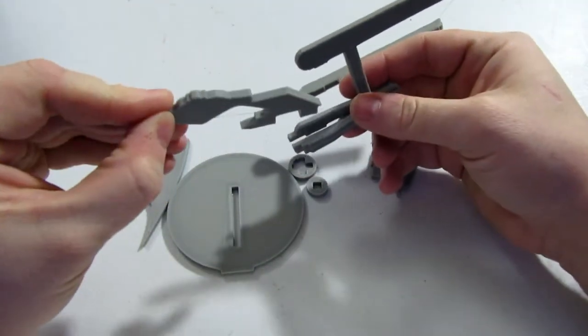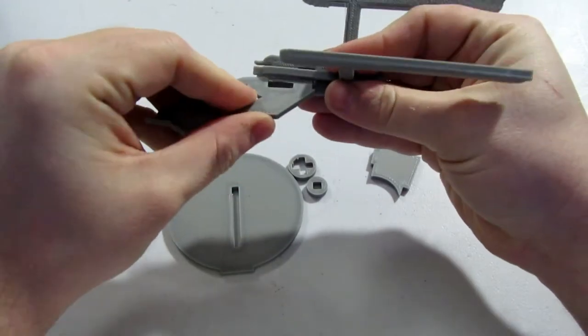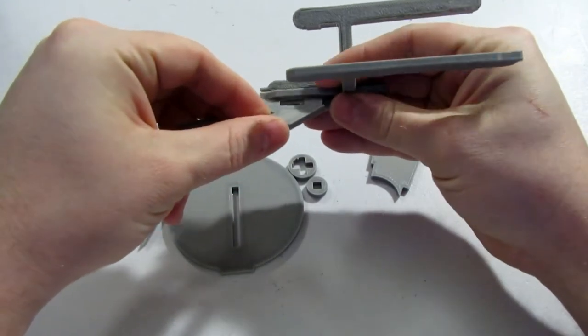This section here holds the saucer section, and it should just slip right into the holes cut through here.